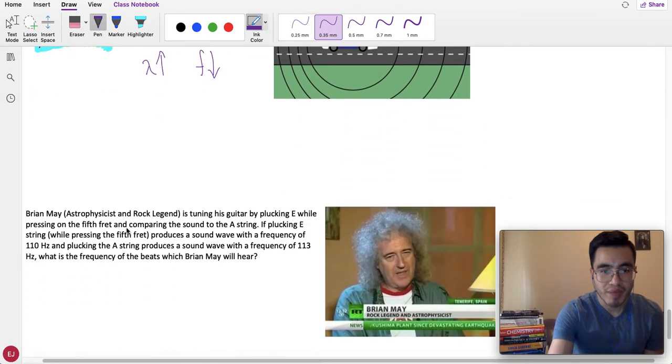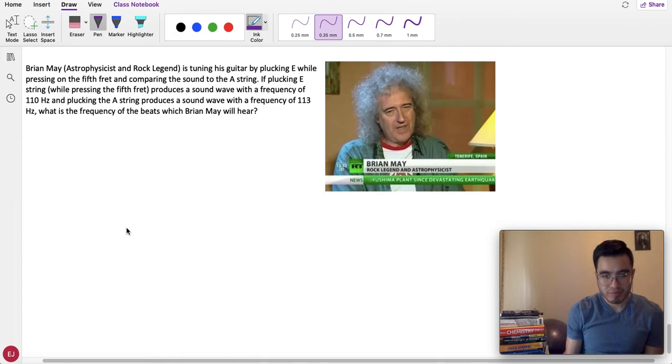Last exercise. This one's about beats. It says, Brian May from Queen, astrophysicist and rock legend. Man, what a title. Is tuning his guitar by plucking E by pressing on the 5th fret and comparing the sound to the A string. If plucking E string while pressing the 5th fret produces a sound wave with the frequency of 110 Hz, and plucking the A string produces a sound wave with the frequency of 113 Hz, what is the frequency of the beats which Brian May will hear? This is about beats.